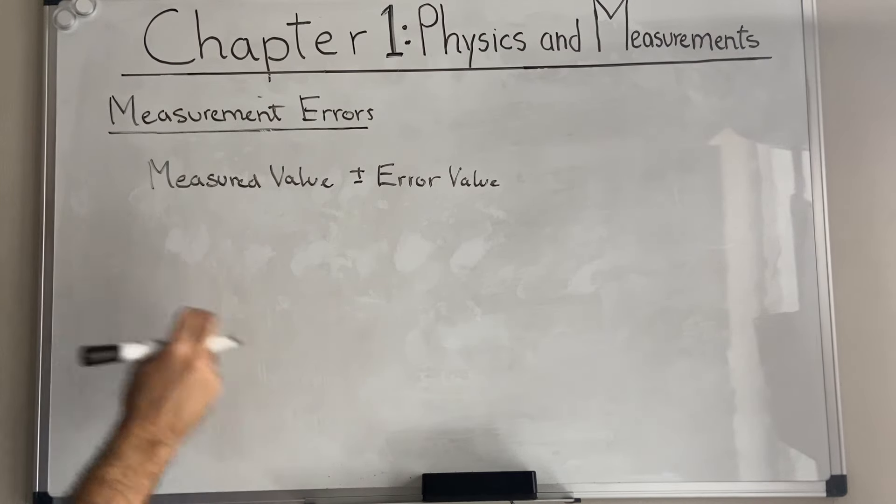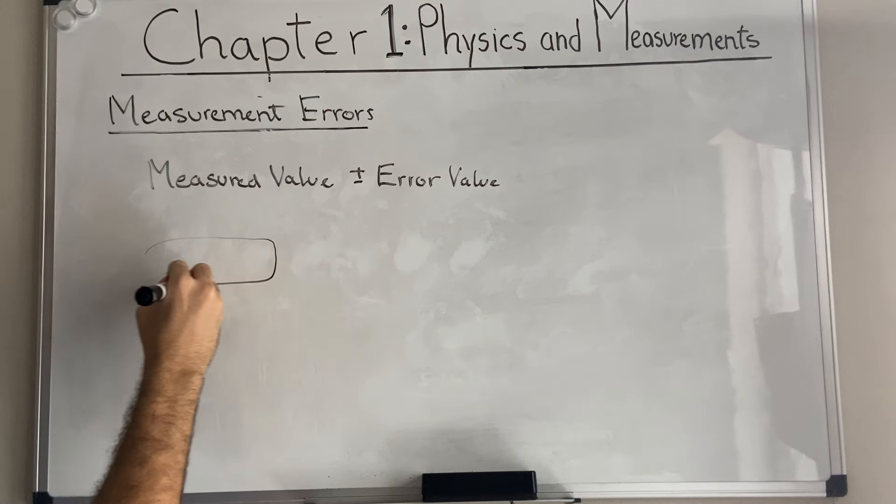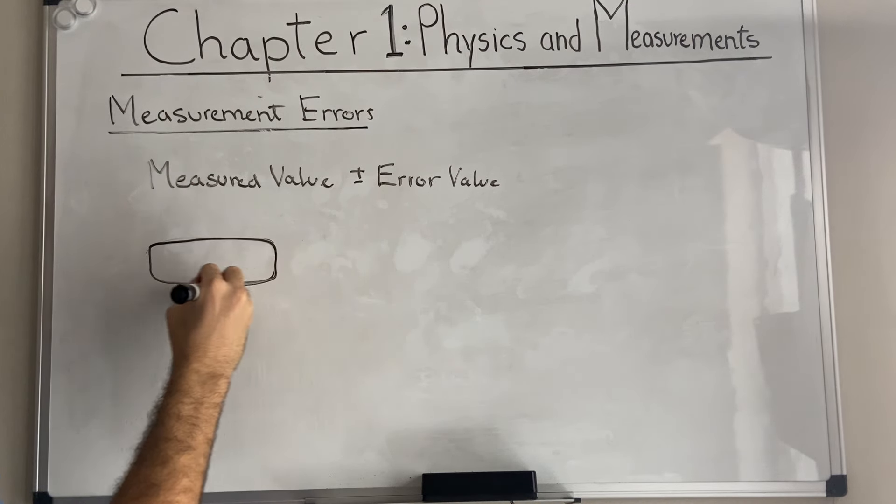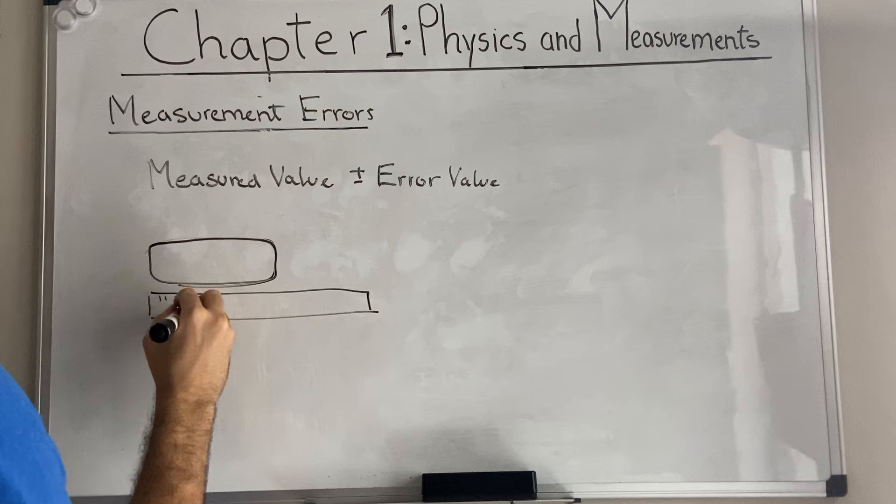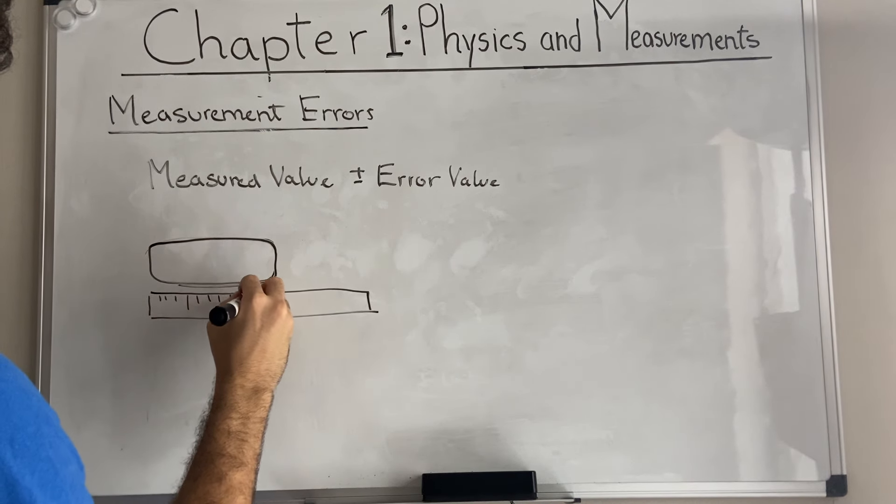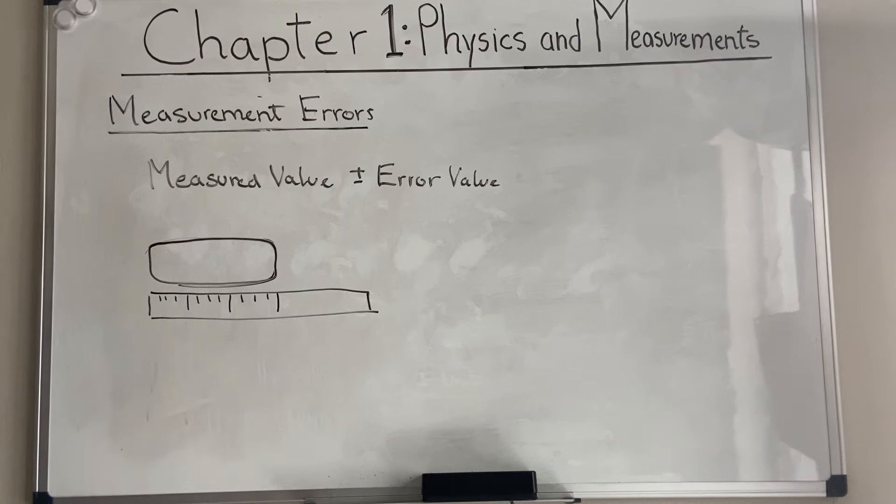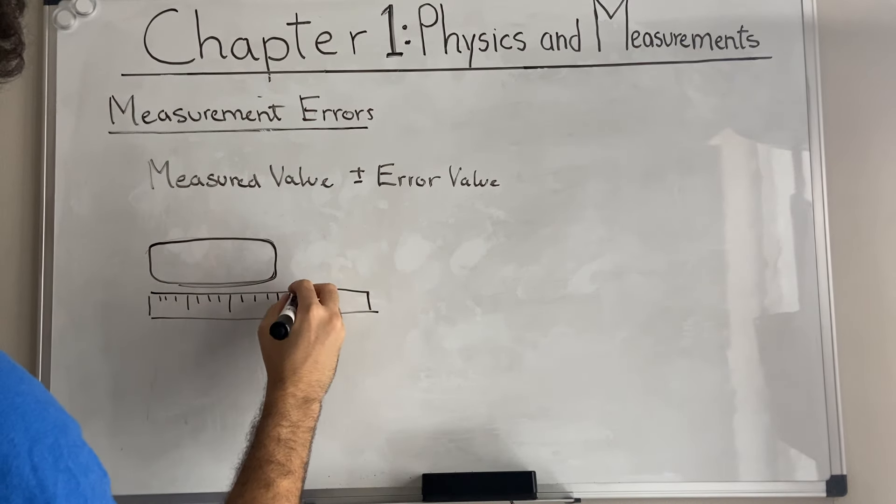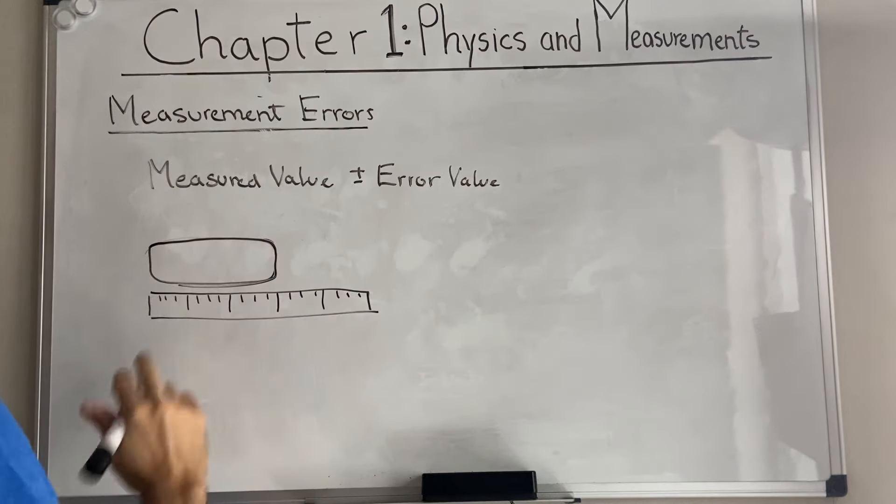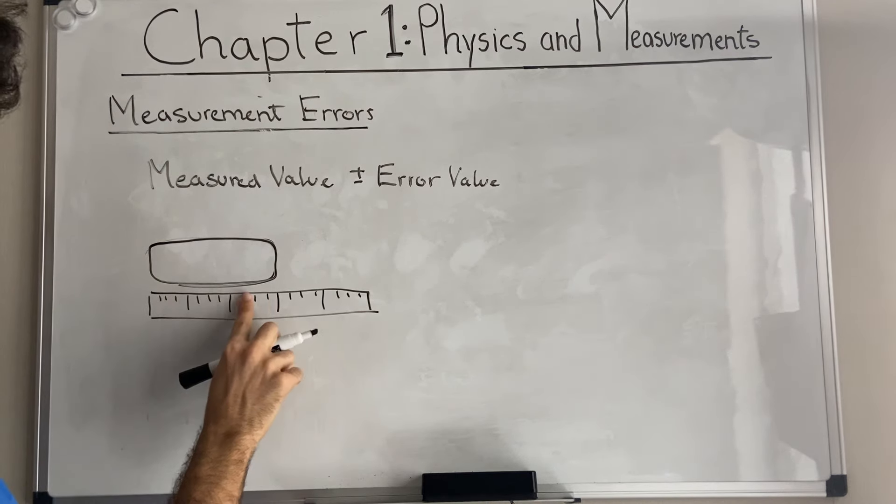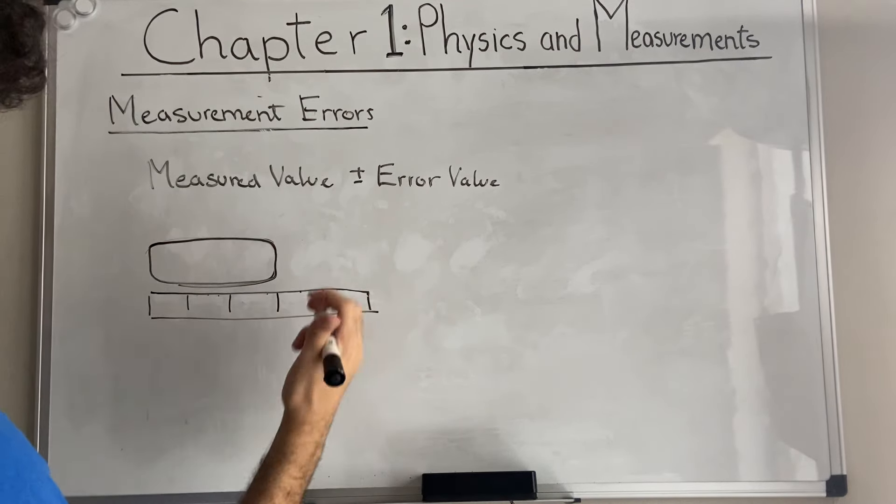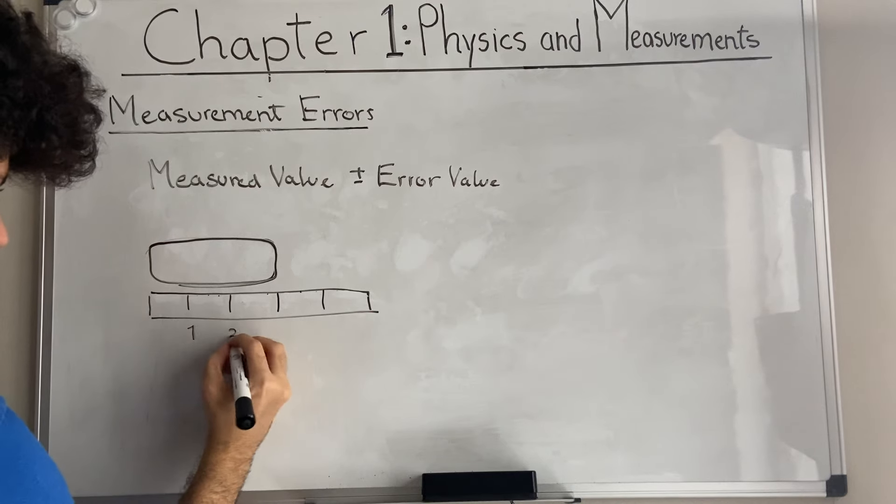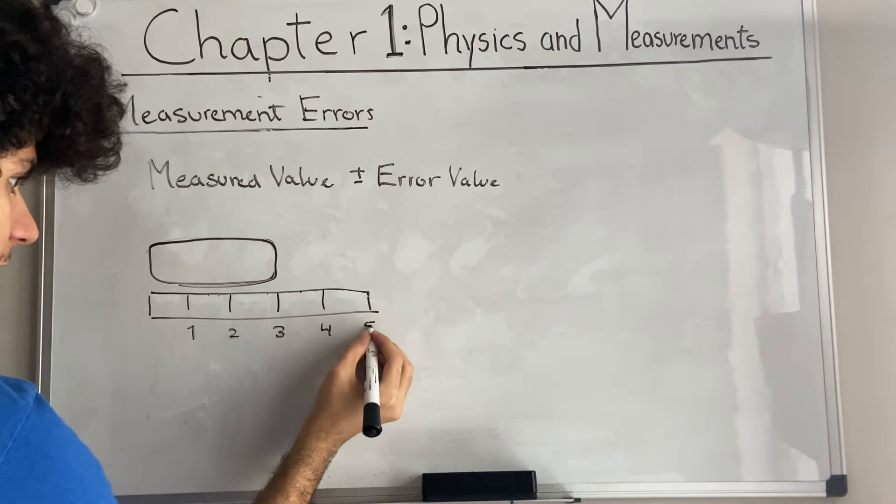An example: say we have a block of something that we're trying to measure. And we have a ruler. Let's say that this is one inch, two inch, three inches, four inches, five inches. Okay. The length of this box. A proper way to report this value would be as such. The length is equal to three plus or minus 0.5 inches.